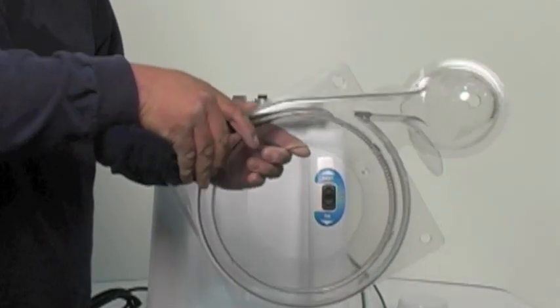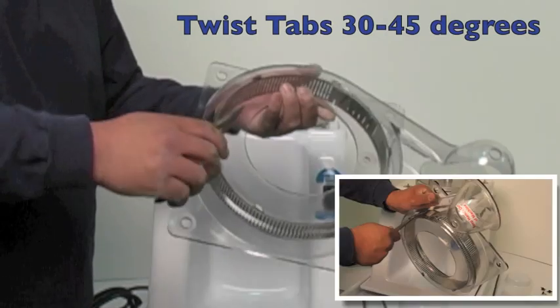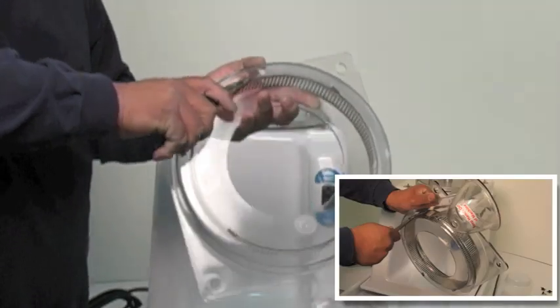Using your fingers to support the blade, turn the unit upside down and twist the tabs 30 to 45 degrees, just enough to snug the blade to the housing.